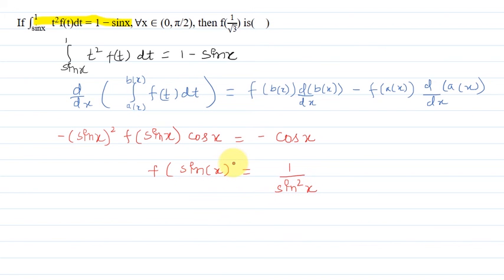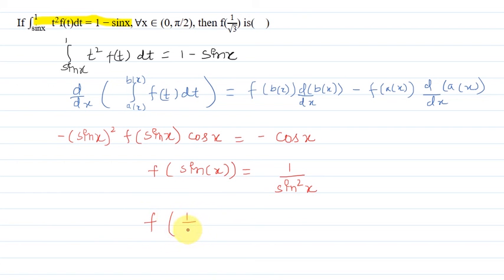So we have arrived at: f(sin x) is equal to 1 upon sin x. And the value we need to calculate is f(1/√3).